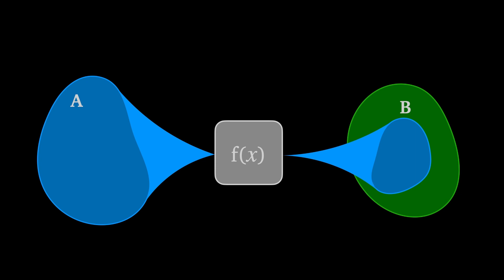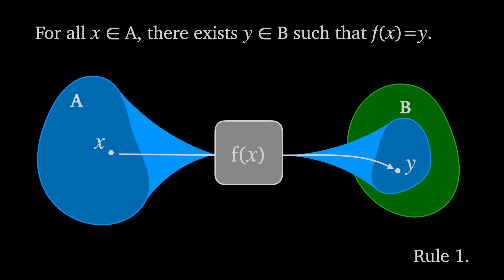By definition, a function must follow two rules. Rule one ensures that given any element x in A, there is always a corresponding y in B such that f(x) is equal to y. In everyday language, that means that the function must give a valid output for every value put into it.